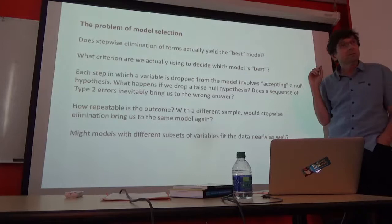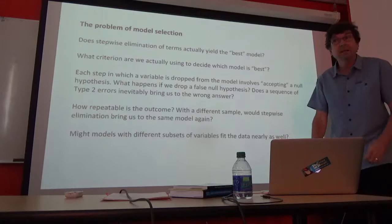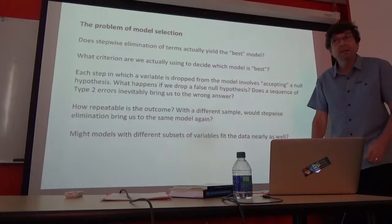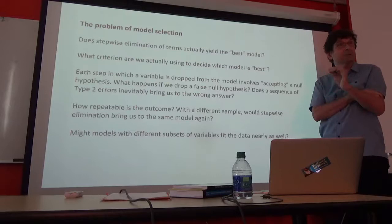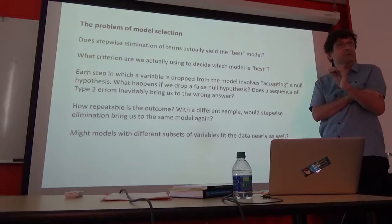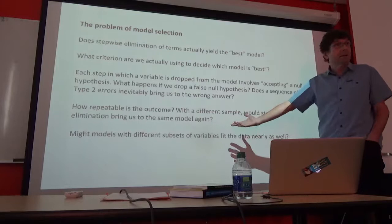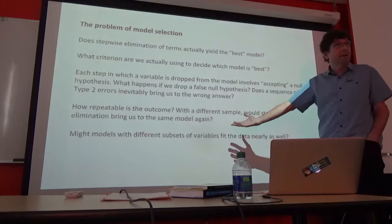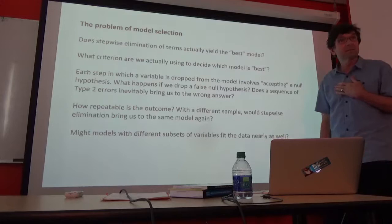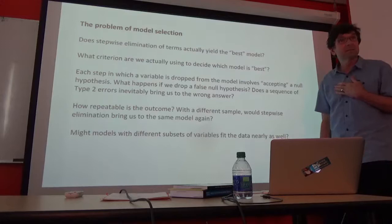The problem has also been pointed out in the readings: every time you throw a term out, you accept a null hypothesis. And by doing so, you are potentially biasing your model. What happens if you drop a term from the model that actually should be there — that really does influence the y variable? We would end up causing a sequence of Type II errors potentially. And is this likely to lead us to the correct model? How repeatable is the outcome? If we go out to nature and collect from the same populations and run the same procedure, do we end up with the same conclusion — the same best model?